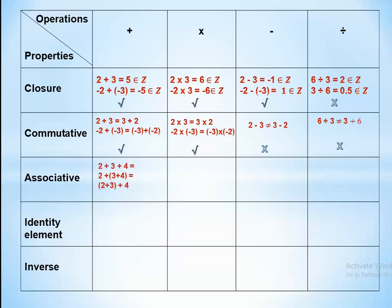Associative property means if we have 2 plus 3 plus 4, we can group it as 2 plus (3 plus 4), giving 2 plus 7 equals 9, or as (2 plus 3) plus 4, giving 5 plus 4 equals 9 — the same answer either way. So associative exists in addition.